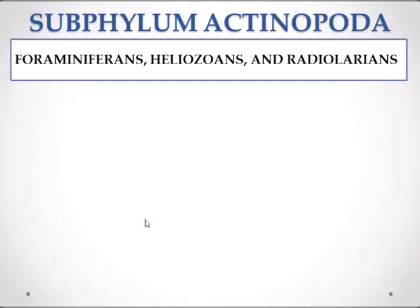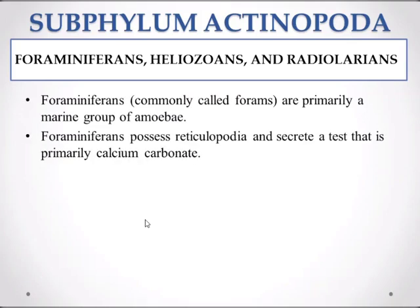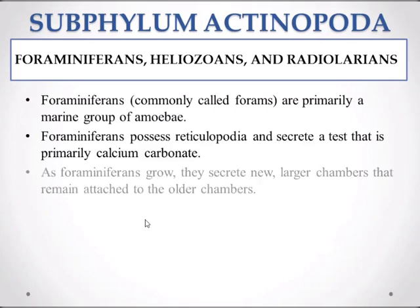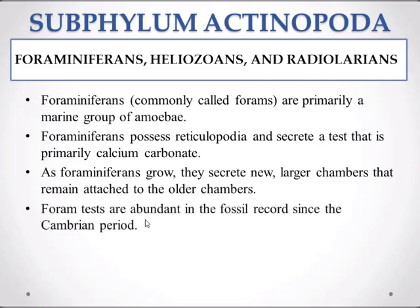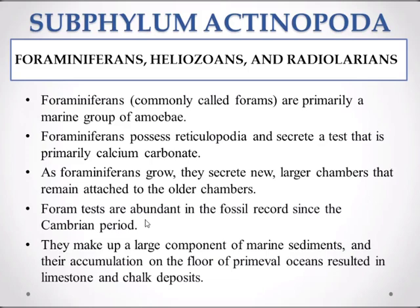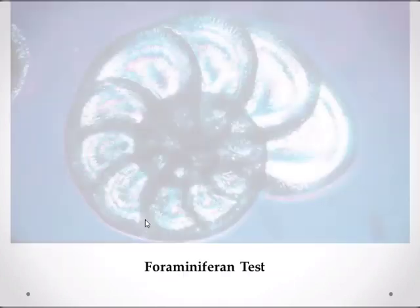We will now discuss the subphylum Actinopoda, which includes the foraminifers, heliozoans, and radiolarians. The foraminifers, commonly called forams, are primarily a marine group of amoeba. They possess reticulopodia and secrete a test that is primarily calcium carbonate. As foraminifers grow, they secrete new larger chambers that remain attached to older chambers. Their tests are abundant in the fossil record since the Cambrian period and make up a large component of marine sediments, resulting in limestone and chalk deposits.